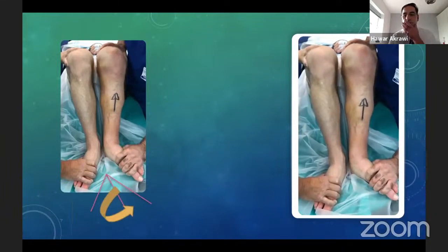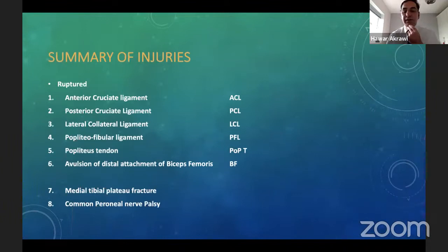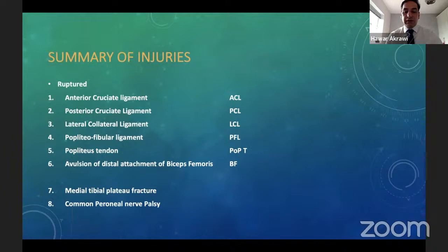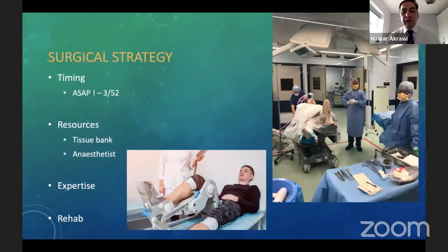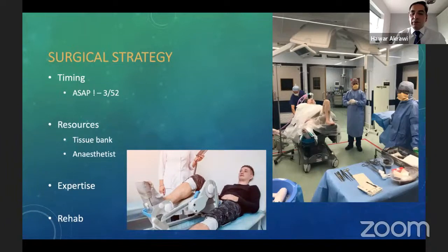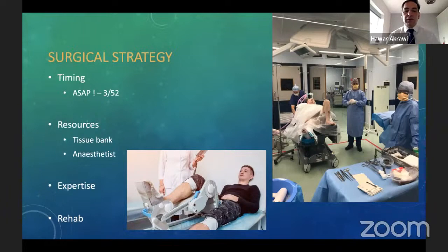To summarize this injury: he sustained a bicruciate ligament injury, injured his lateral collateral ligament, popliteofibular ligament, ruptured his popliteus tendon, there is avulsion of the distal attachment of the biceps femoris, and he has an associated medial tibial plateau fracture. We decided to proceed around three to four weeks after injury. The timing I advocate in my unit is around three weeks — anatomy is still relatively preserved, and there's a good chance for the posterior capsule to scar up, reducing the risk of arthroscopic fluid extravasation to the posterior compartment and minimizing the risk of compartment syndrome.